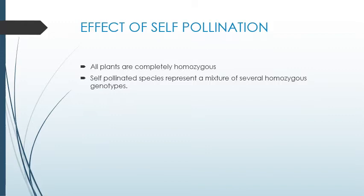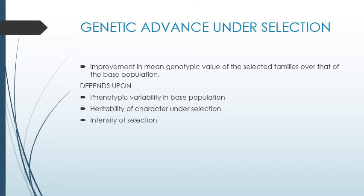As a result, all the plants are completely homozygous in nature, and a population will have several homozygous genotypes — that is why we selected the large seed size and smaller seed size. Genetic advance under selection: if you select something, the genotype of the plant gets advanced. Genetic advance is defined as the improvement in mean genotypic value of the selected family over that of the base population — the base population being the population from which we selected.